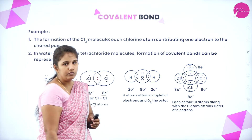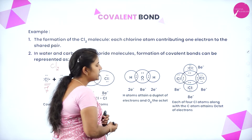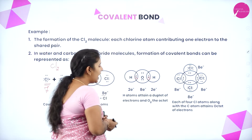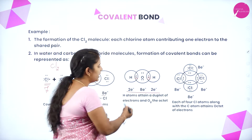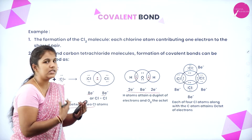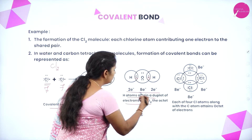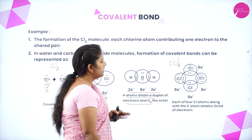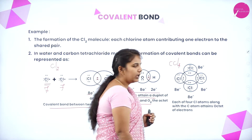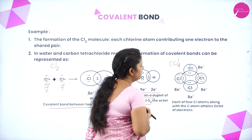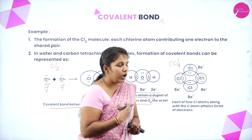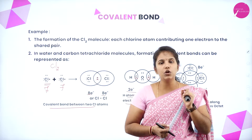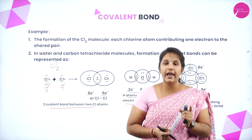In water, oxygen has 6 electrons and shares 1 electron with each hydrogen atom, attaining a stable electronic configuration, while each hydrogen atom gets 2 electrons — a doublet. In CCl4, each of the 4 chlorine atoms shares 1 electron with carbon to form a stable electronic configuration of 8, forming single covalent bonds. This is how single covalent bonds are formed by sharing one pair of electrons between two atoms.